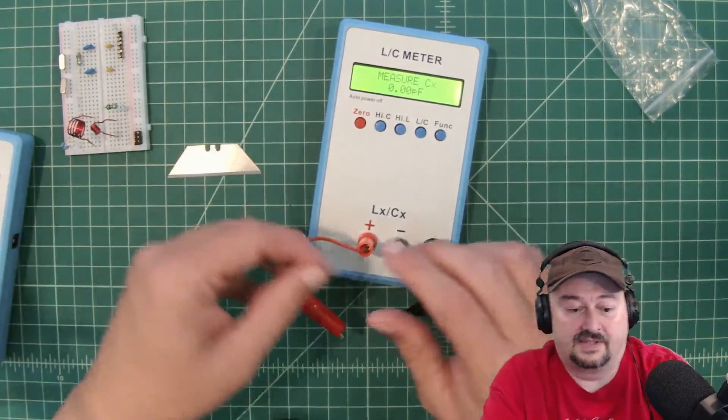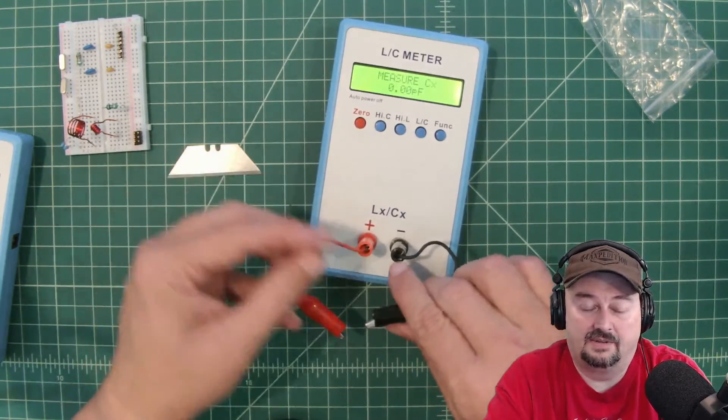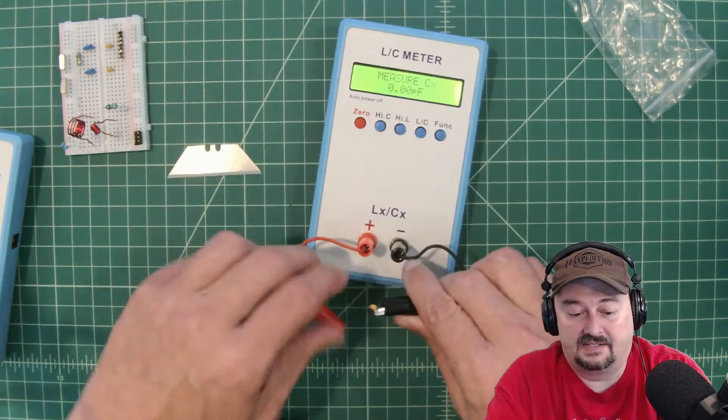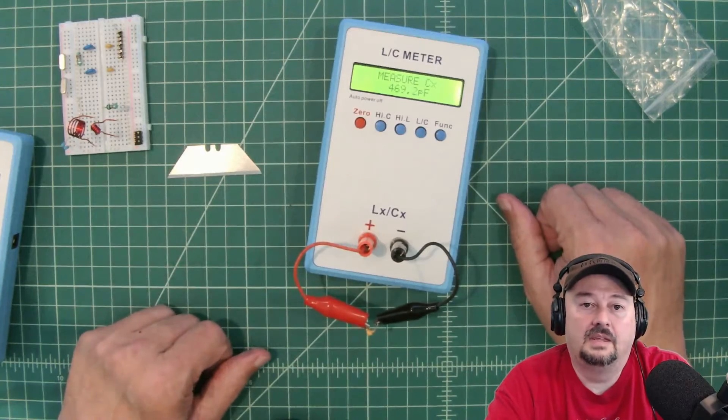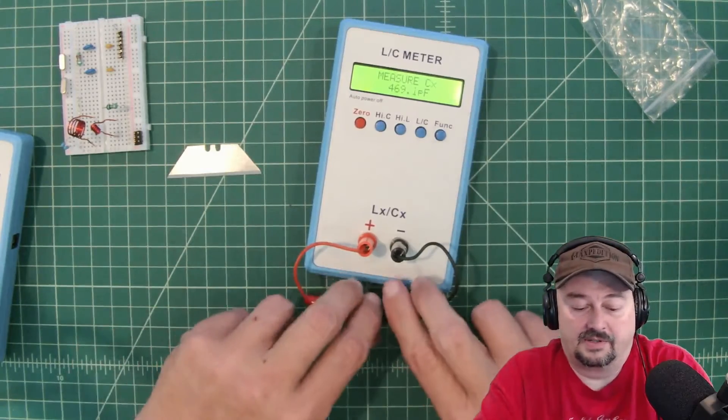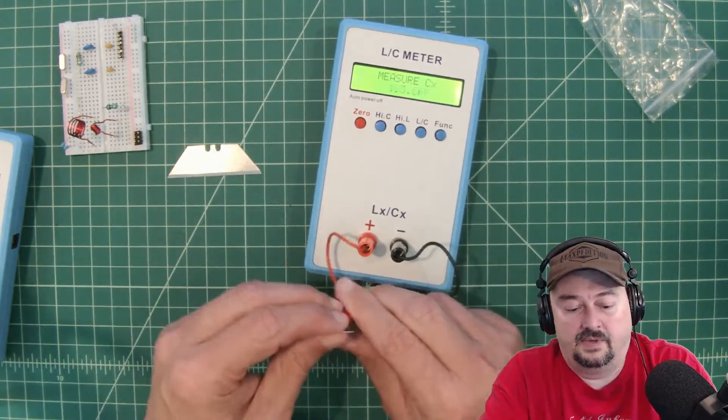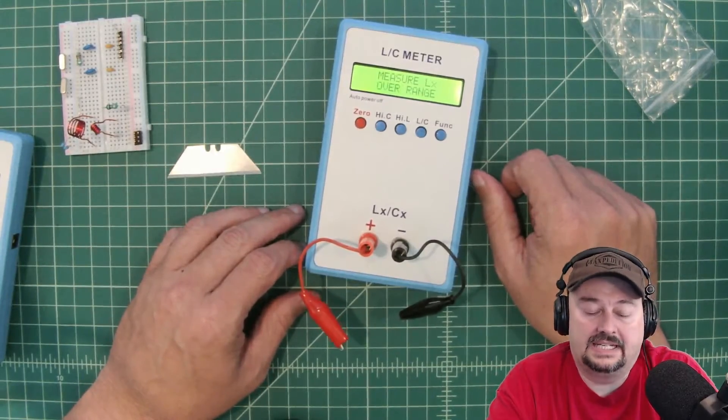Here's another capacitor. Now, this one, I definitely don't know what the value is, but this is a little teeny tiny one. Imagine trying to read that. So let me go ahead and hook that up and we can see it measured. And this is probably 500 picofarad with a little bit of a margin on there. All right, well, we've done that. We've covered that. Let's go over and take a look at inductance.